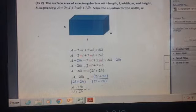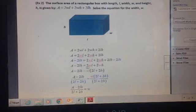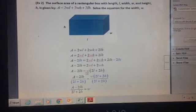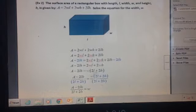Now I need to factor out w. When I do, I'm left with 2l in this term and 2h in this term. Again, I have two factors: w and (2l + 2h). The last step.